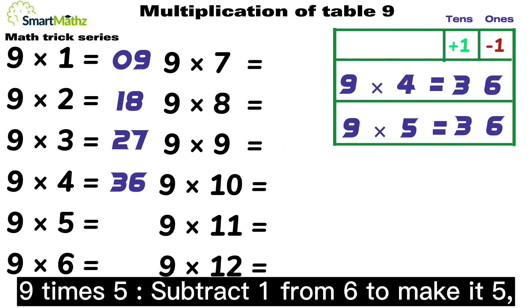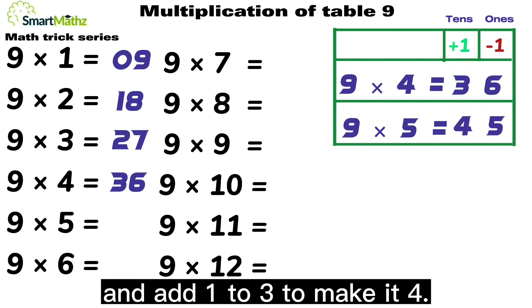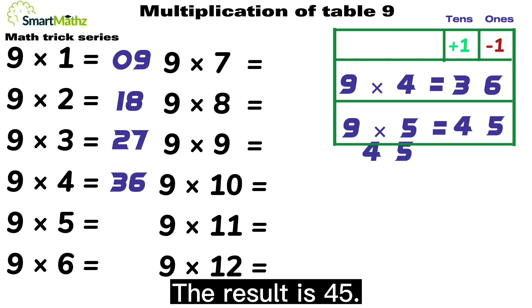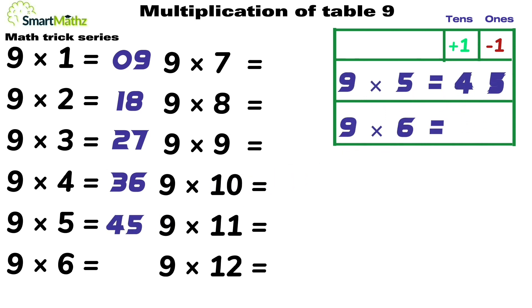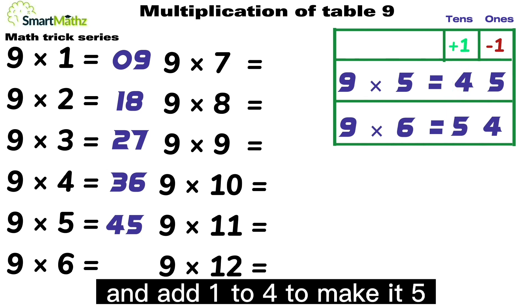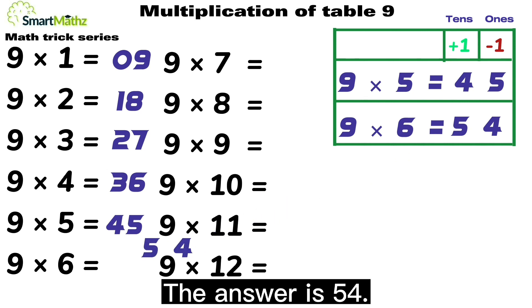9 times 5, subtract 1 from 6 to make it 5, and add 1 to 3 to make it 4. The result is 45. 9 times 6, subtract 1 from 5 to make it 4, and add 1 to 4 to make it 5. The answer is 54.